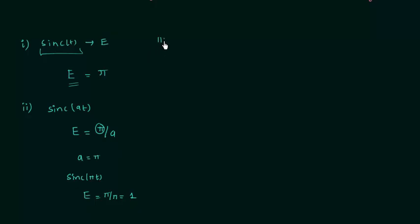The third property has already been explained: when t approaches infinity, sinc(t) = 0. That is all for this lecture. If you have any doubts related to sinc functions you may ask in the comment section.